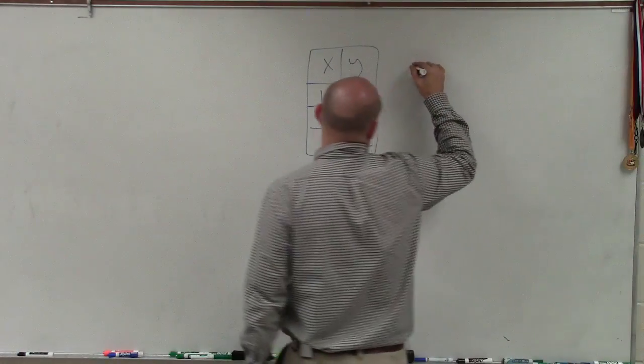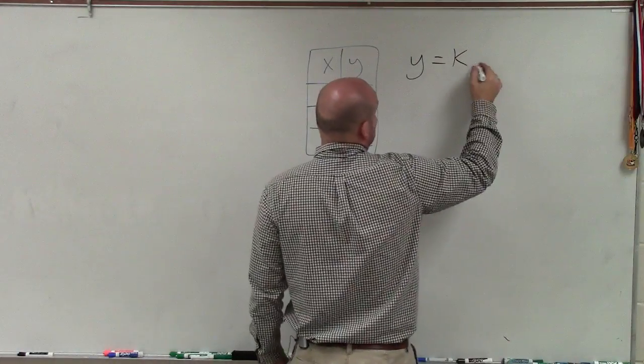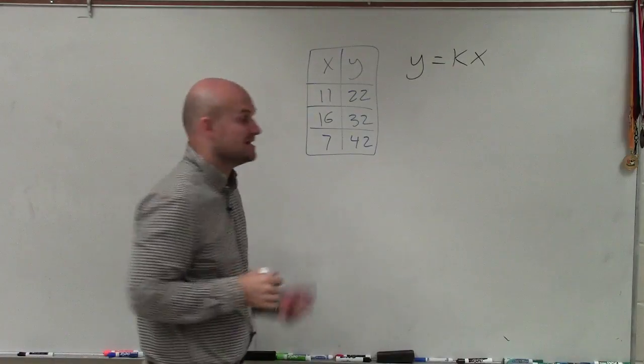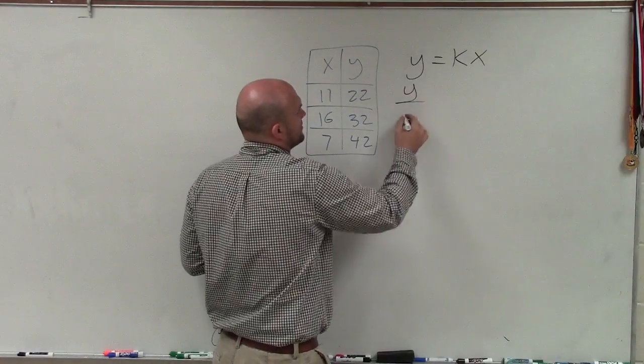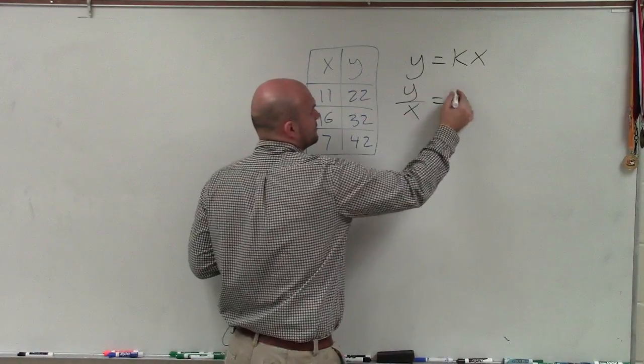To understand that, there's a couple different ways we can look at direct variation between y and x. We can write it as y equals k times x. Or if y varies directly with x, we can write it as y over x equals k.